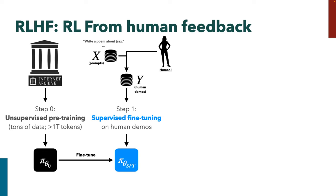After pre-training, we do some supervised fine-tuning on human demonstrations, which gets the behaviors we're interested in into distribution for the model. You can think of the first two steps as: step zero learns background knowledge about the world, and step one does a little fine-tuning on human-written demonstrations of what a good response looks like — like 'write a poem about jazz' or whatever. We fine-tune that original pre-trained model and get this SFT model.